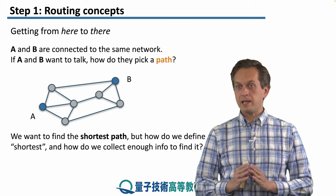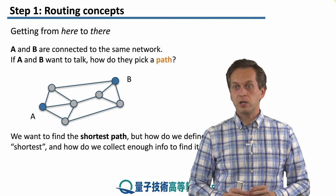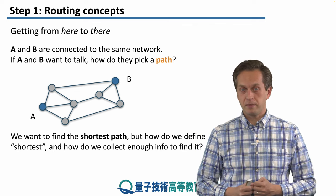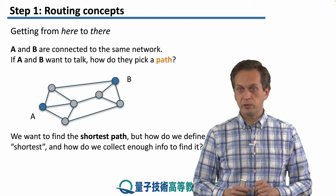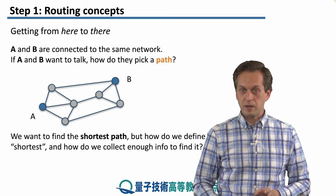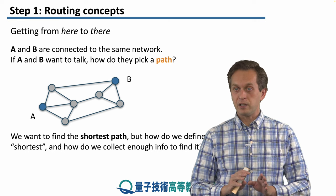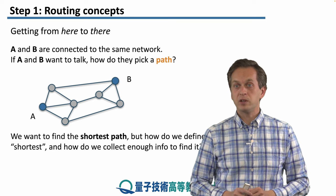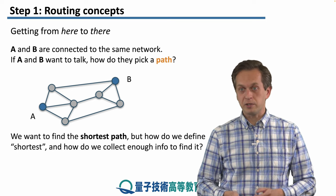And also, we don't want to choose any path. We want to choose the best possible path or sometimes called the shortest path. We're going to discuss what shortest means shortly, but it's picked by first collecting enough information about the network, the topology and the various links, and then computing which path is the best or shortest.